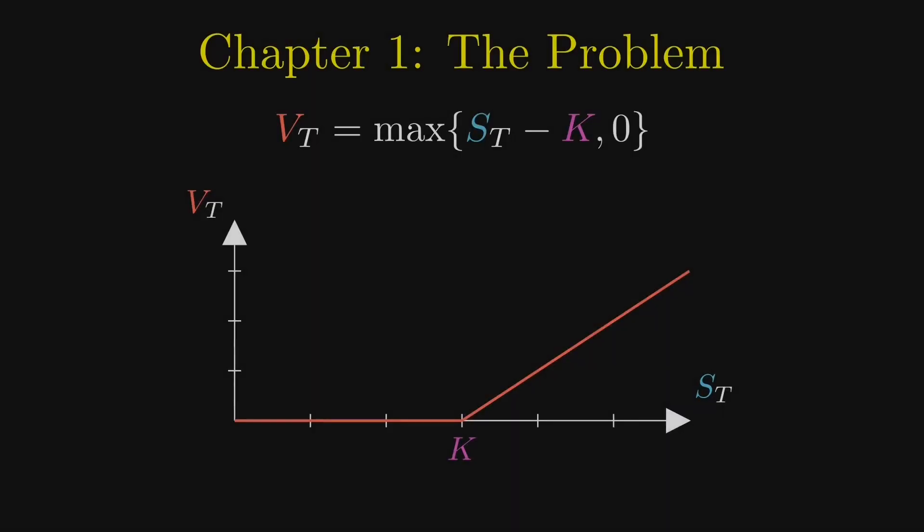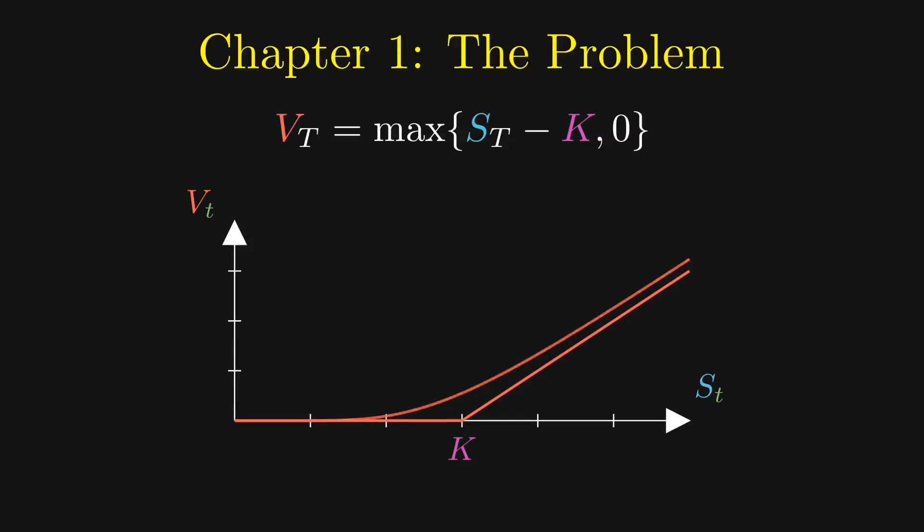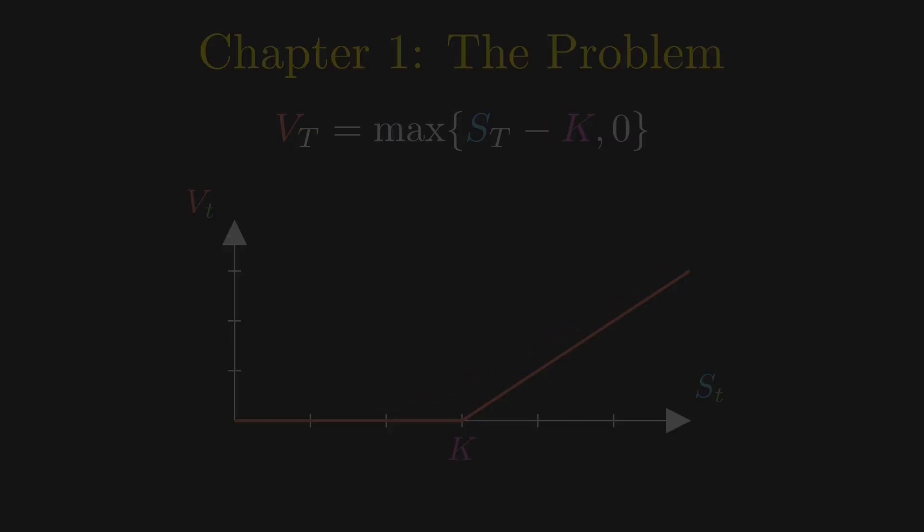If we change the axes to represent the current stock price and the current option price at time small t, then as we slowly roll backwards in time, we see that the option price goes higher than the payoff graph at expiration. We think to ourselves, how can we model this?